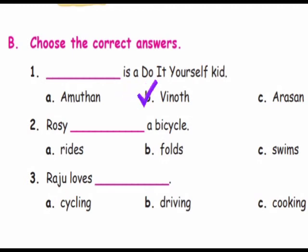Second one: Rosie's bicycle — A. Rides. B. Foles. C. Swims. Answer: A. Rides.